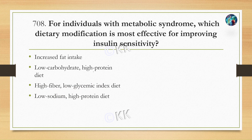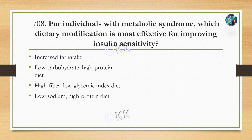For individuals with metabolic syndrome, which dietary modification is most effective for improving insulin sensitivity? Option A: increase fat intake. Option B: low carbohydrate, high protein diet. Option C: high fiber, low glycemic index diet. Option D: low sodium, high protein diet. This is an easy question — for diabetes and metabolic syndrome, a low glycemic index diet is recommended. High fiber helps maintain gut integrity and healthy values, making Option C the correct answer.